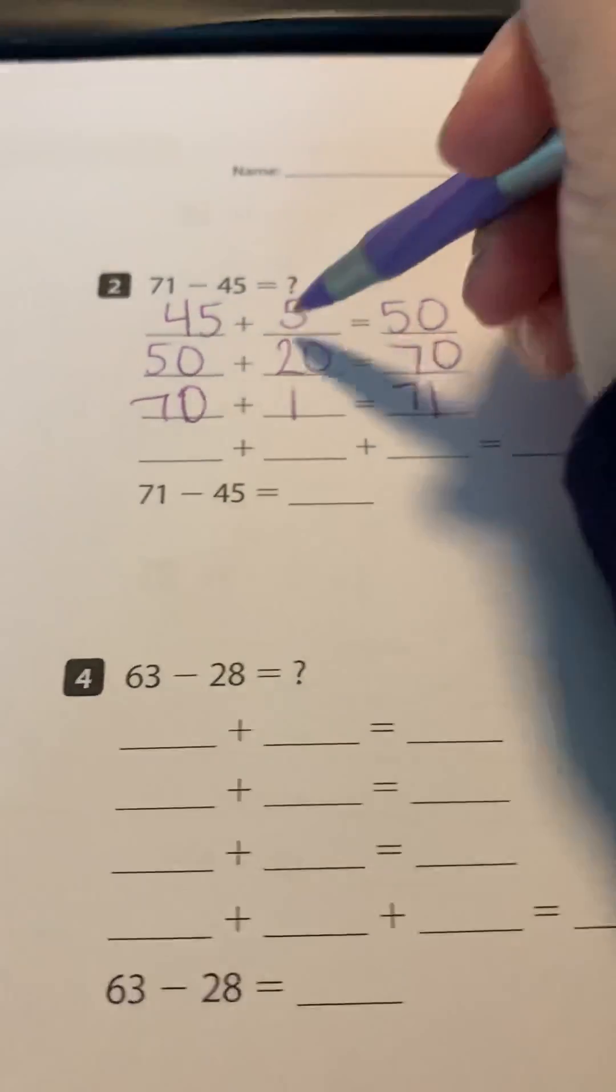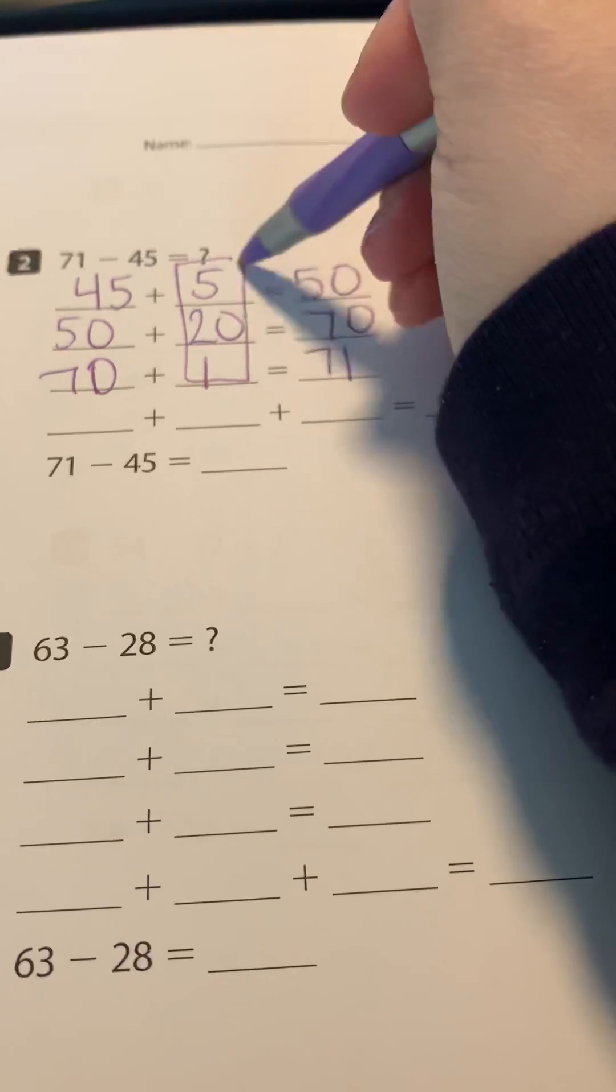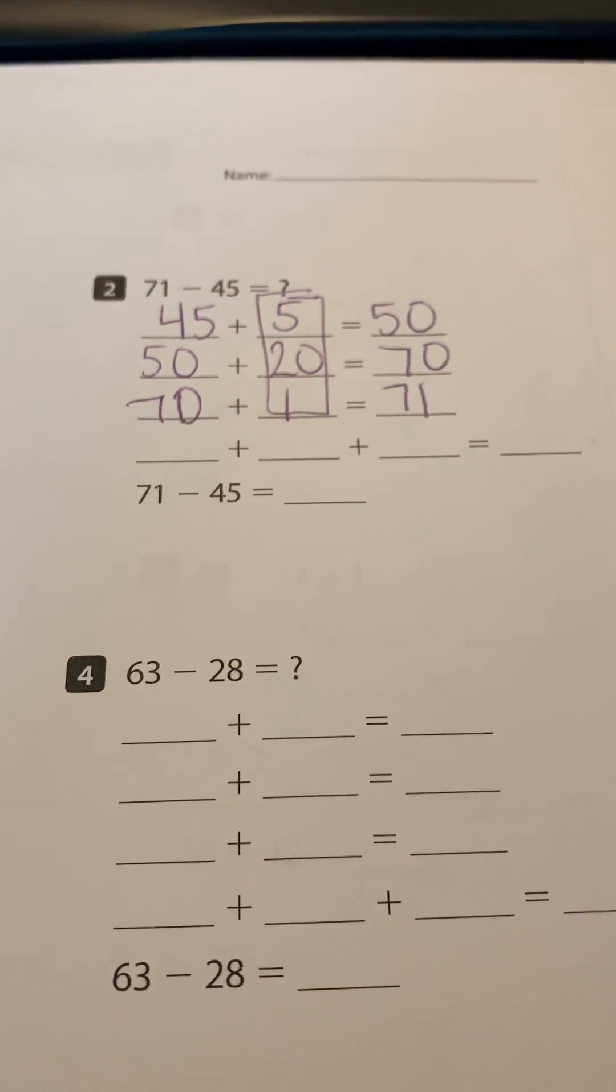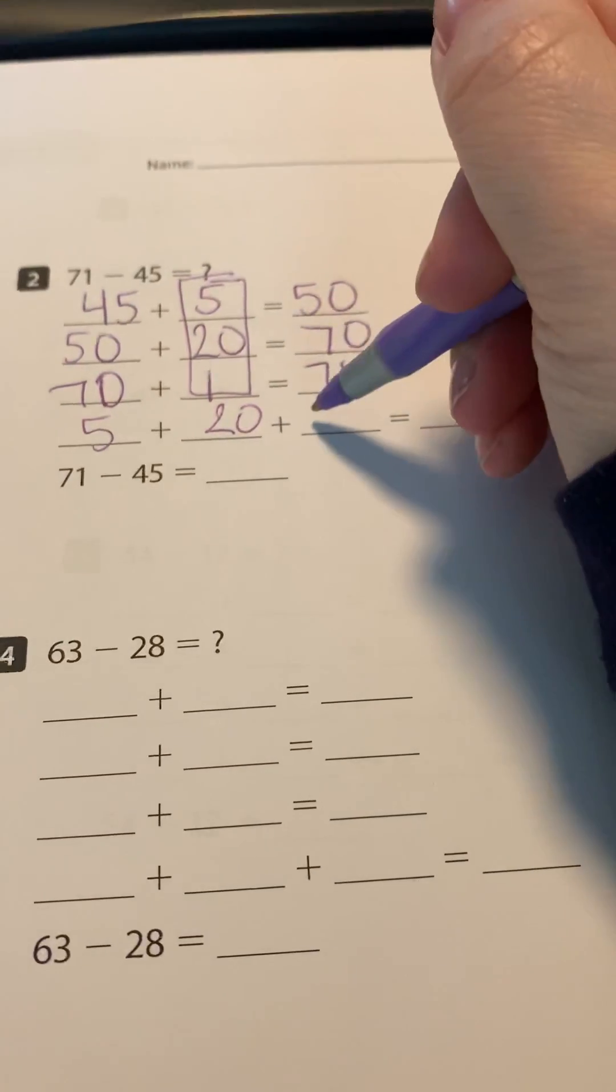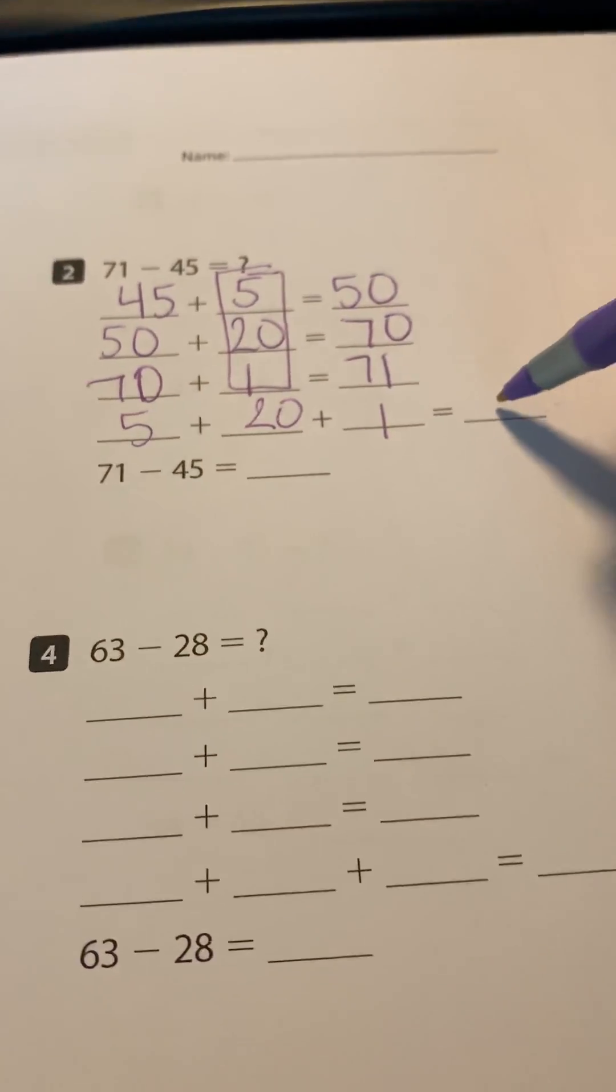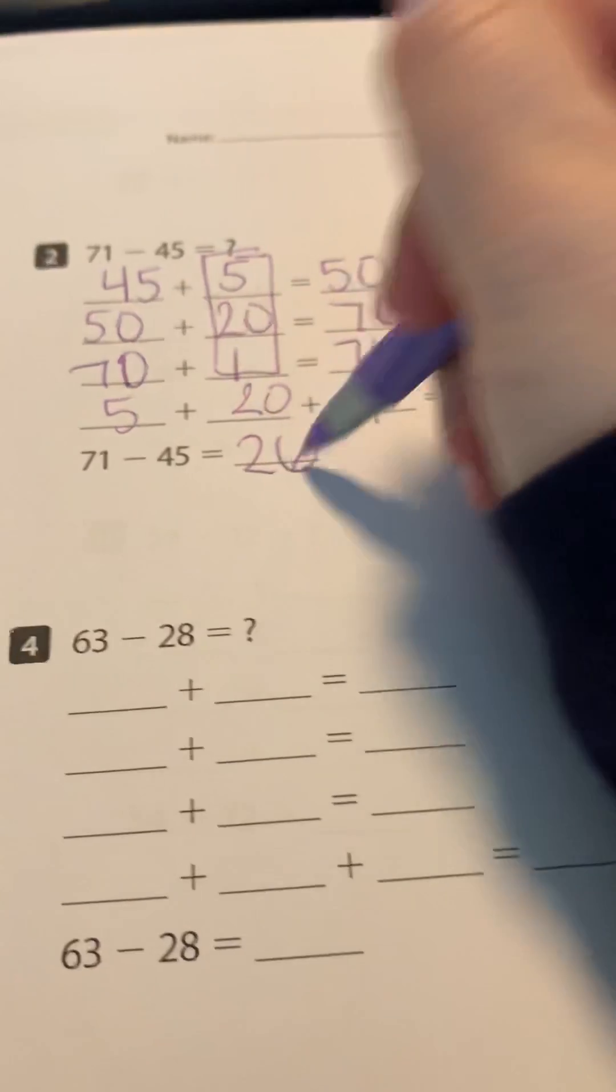So this bottom line here, this one, it's just telling you to add the three add-ins that you already found. So I'm just going to add five plus 20 plus one to get 26, and that is my answer.